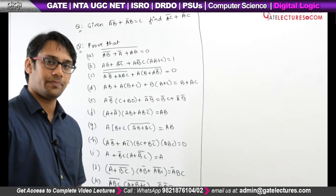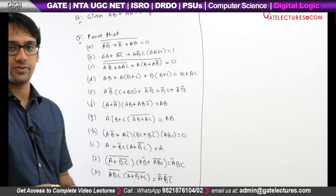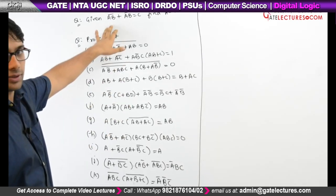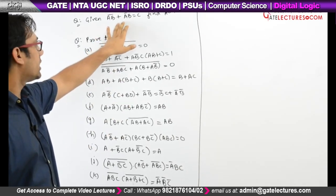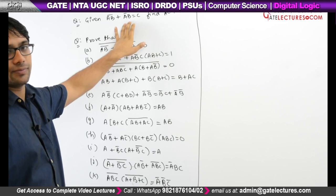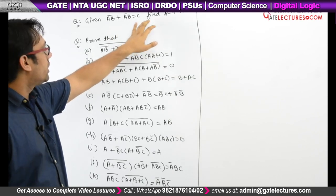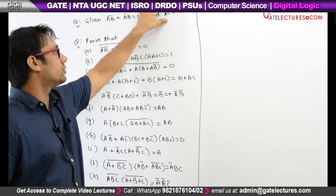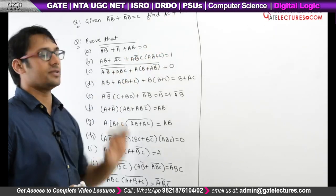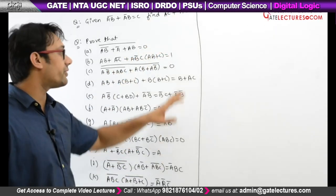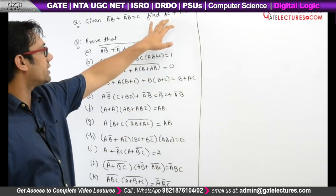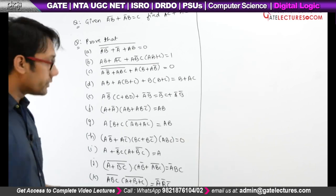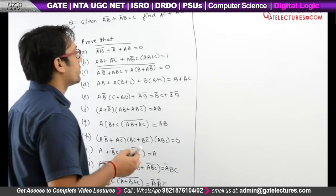Let us take this question. It says we have (AB)' + A'B = C. Now find what is (AC)' + A'C. We need to find the value of (AC)' + A'C. So let us take this equation.